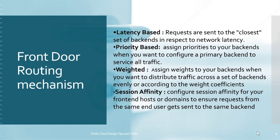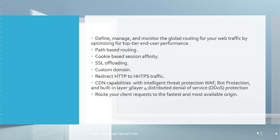Let's understand the different routing mechanisms. First, latency-based routing: the backend nearest to your Front Door will be routed to, to increase performance. Second, priority-based: when you have multiple backends with assigned priorities, the highest-priority backend is routed first. Third, weighted routing: traffic is distributed based on weights assigned to backends, like 70% to backend one and 30% to backend two. Fourth, session affinity: when logged into a system, subsequent requests go to the same server. All four routing mechanisms are currently supported by Azure Front Door.